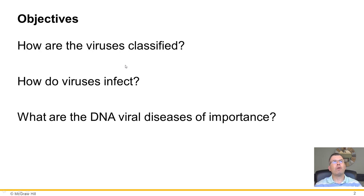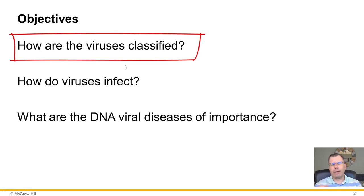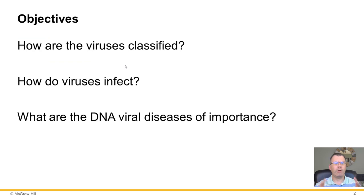Today we're going to talk about how viruses are classified. The two major classifications are DNA versus RNA, and then envelope versus non-envelope. You could also classify by the shape of the virus, but the major classifications are DNA versus RNA and envelope versus non-envelope, with some other subtleties as well.